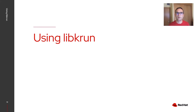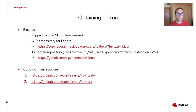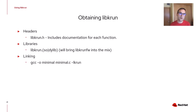Now that we know what LibKRUN is, let's talk about how you can use it. The first step is to obtain LibKRUN. We already have binaries shipped by OpenSUSE Tumbleweed, there is a COPR repository for Fedora, there is a Homebrew repository for macOS M1 which uses the Hypervisor framework instead of KVM, and you can of course build it from sources. The project is hosted in the Containers organization on GitHub. Once you have LibKRUN, you get a header file containing all the documentation for each function, and a couple of libraries — you only need to worry about LibKRUN itself, as it will bring LibKRUN firmware into the mix.